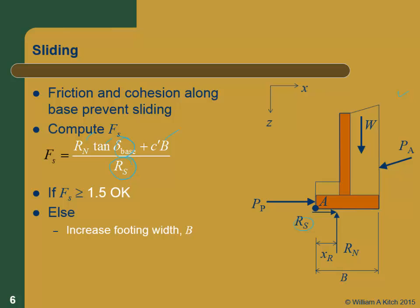If the factor of safety is insufficient, there are several ways to increase sliding resistance. The first and most effective is to increase the width of the footing — specifically, increase the heel. When we increase the heel, our free body diagram extends further, we get a lot more soil weight, the reaction goes up, and we get much more resistance. When you're constrained by a right-of-way limit, you need to think about alternatives such as increasing the depth of the footing.